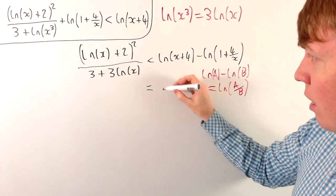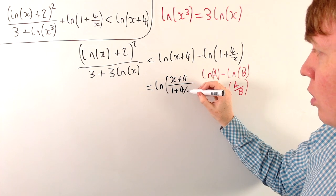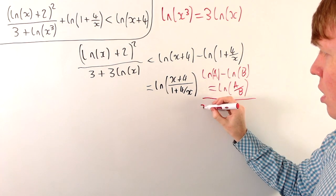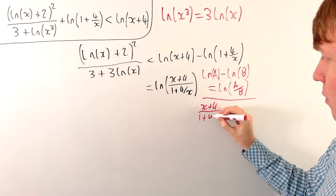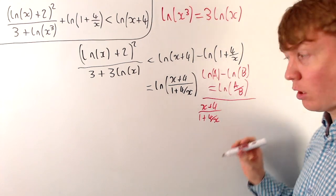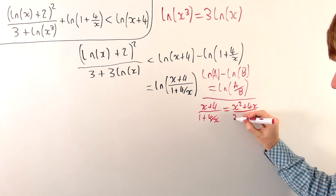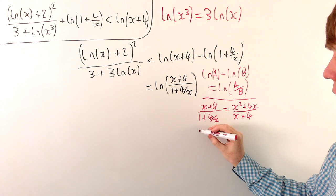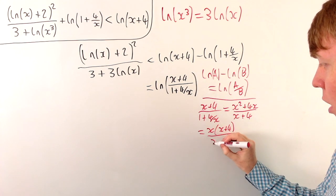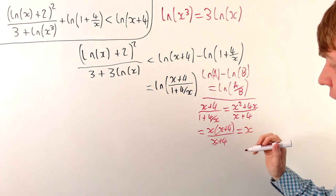The right-hand side is then equivalent to ln of (x+4) over (1 + 4/x). Now let's look at this fraction in more detail. We multiply by x in the numerator and denominator to remove the fraction in the denominator, giving x squared plus 4x over x plus 4. The numerator factorises as x(x+4) over (x+4), so there's nice cancellation.